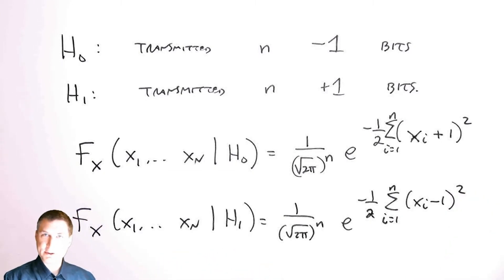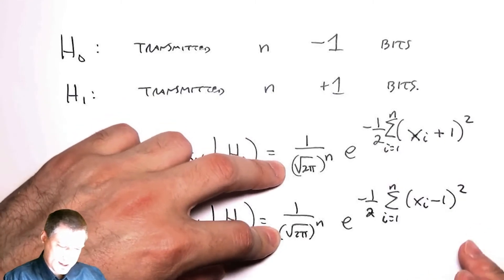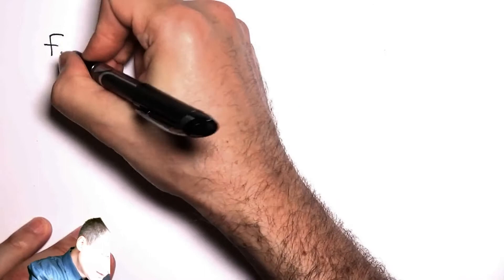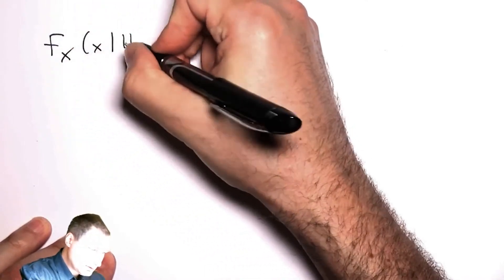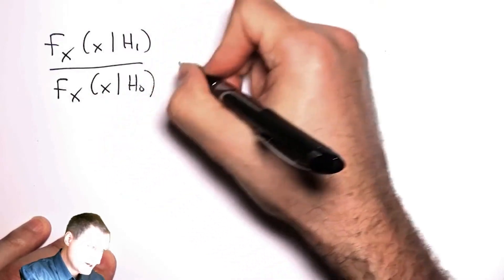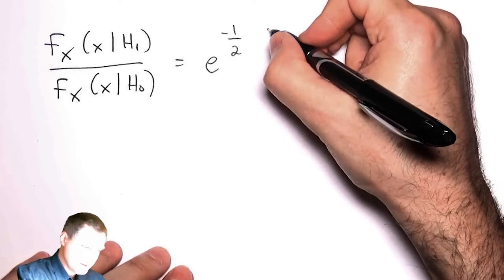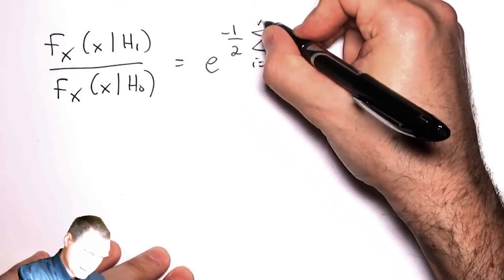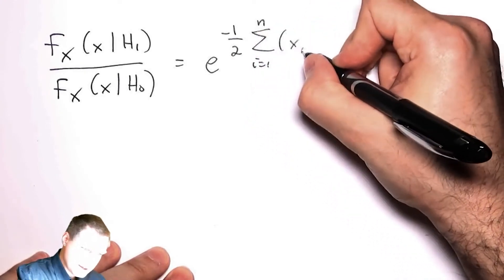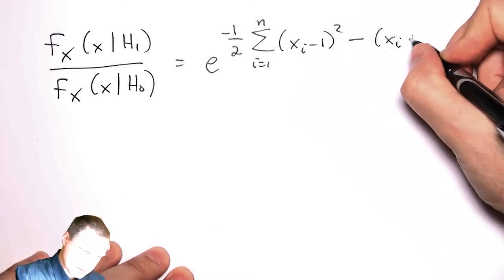Now I have to compute the likelihood ratio, which is basically the ratio between the H1 PDF on top and the H0 PDF on the bottom. The one-over-two-pi terms cancel out, and I'm being a little brief here, but where x represents all the data I observed, I get e to the minus one-half, with the numerator sum and denominator sum written out.